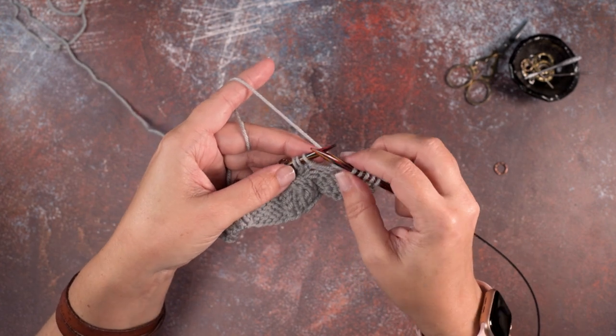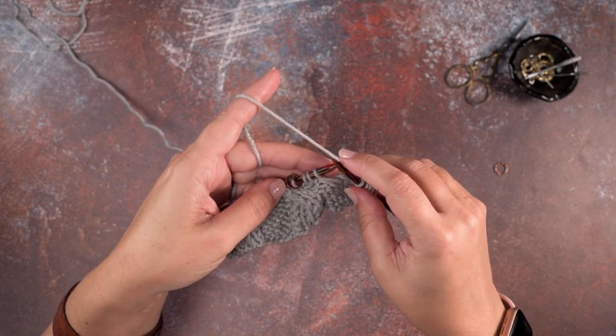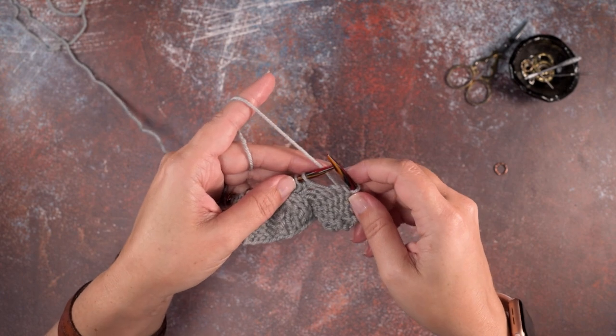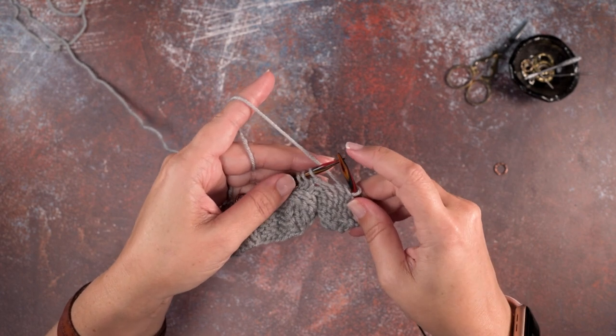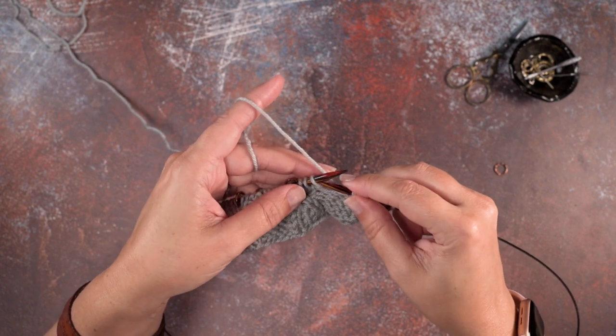To do that instead of using a cable needle we're going to use our working needles and to do this technique without cable needles you want to use working needles that have fairly sharp points so that you can insert the tip of your needles in and out of those stitches.